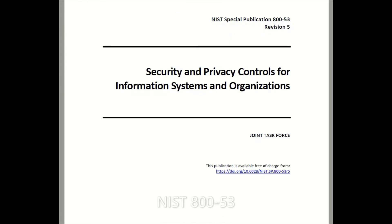The other tool every security control assessor must have is NIST 800-53. This is revision 5, and it's basically a guide on security and privacy controls for information systems and organizations — it has all the NIST security controls in there.